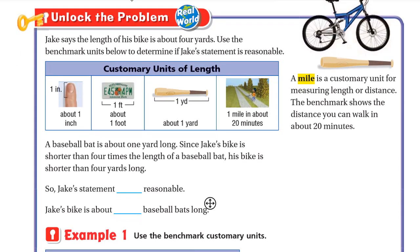Jack says the length of his bike is about four yards. Use the benchmark units below to determine if Jack's statement is reasonable. First, let's see the customary units of length. One inch is about the first knuckle of your finger, and one foot is about the length of a license plate — about the length of your big 30-centimeter ruler.